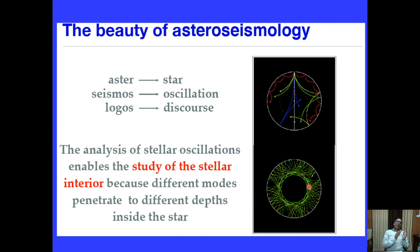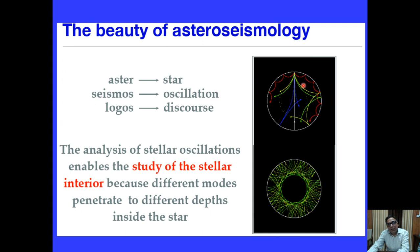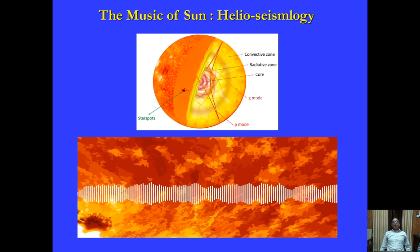Astro-seismology is the analysis of stellar oscillations to study stellar interiors, because different modes penetrate to different depths inside the star. The fundamental mode passes through the center; higher overtones reflect and do not reach the center, being confined to the outer layers. So using the fundamental frequency one can determine the stellar radius, while higher frequencies probe the outer regions. The star acts as a cavity, and one can see the composition in the inner parts.